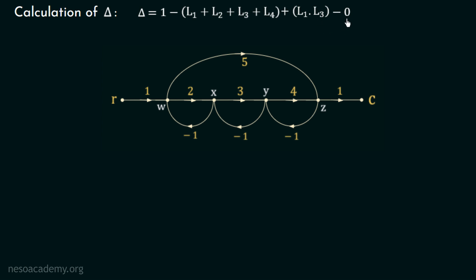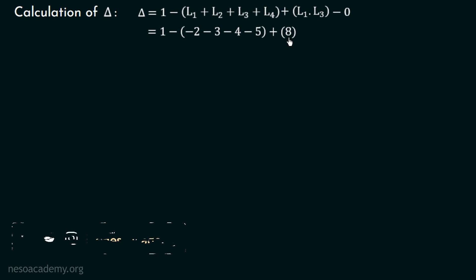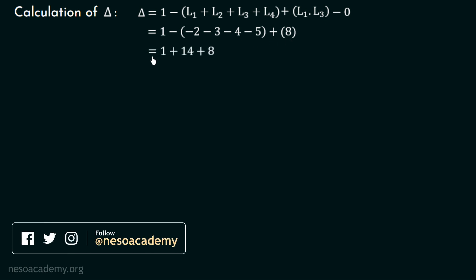We do not have any set of three non-touching loops, so those terms are zero. Putting all values into the determinant formula: Δ = 1 − (L1 + L2 + L3 + L4) + L1·L3 = 1 − (−2 − 3 − 4 − 5) + (−2)(−4) = 1 + 14 + 8 = 23.